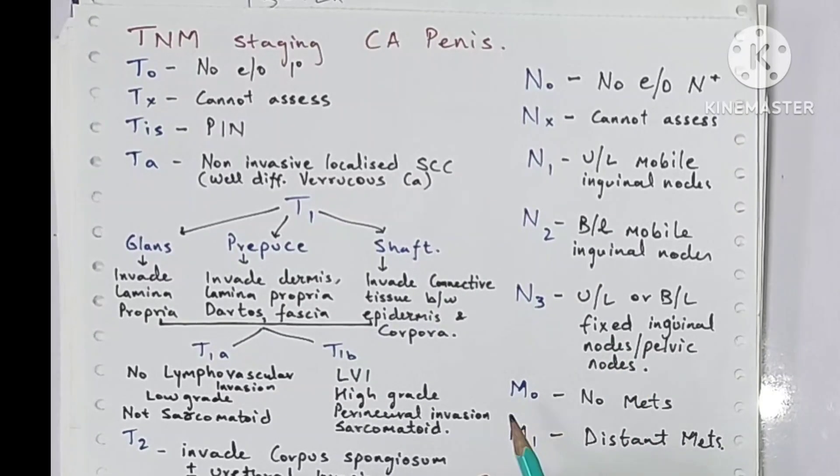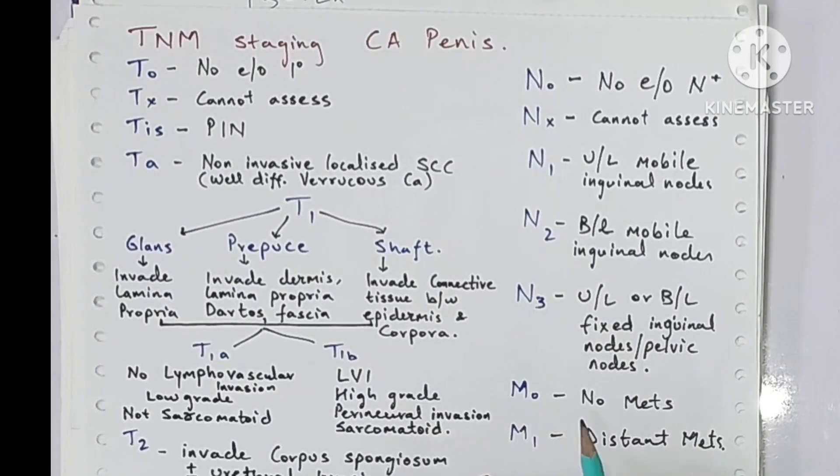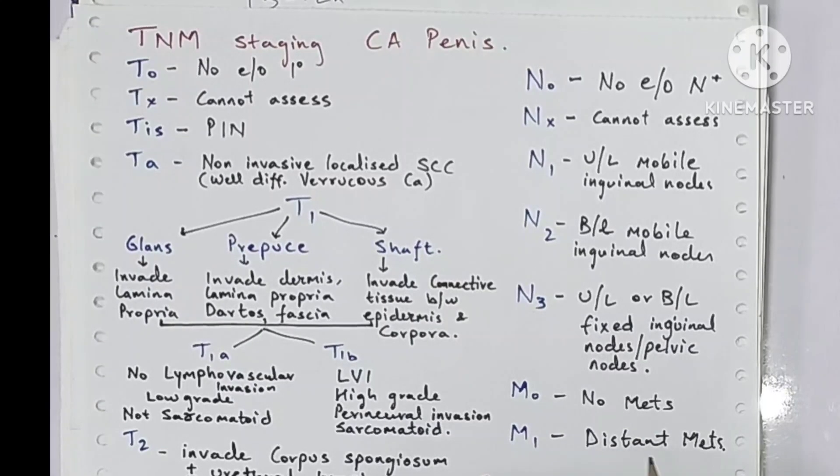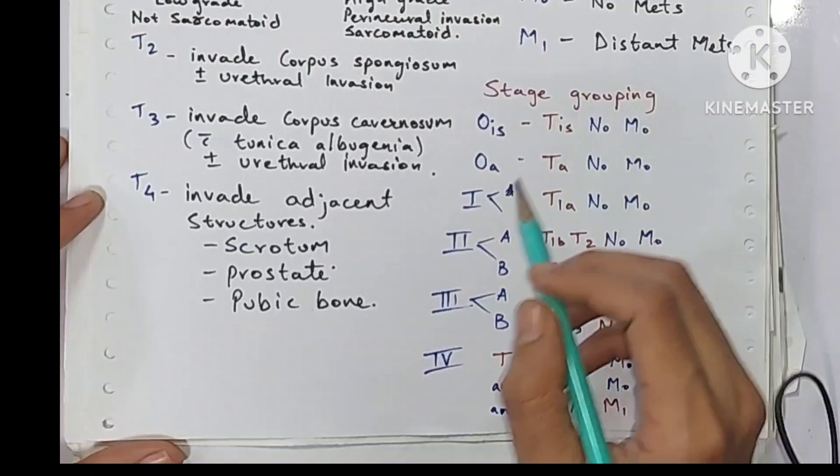For metastasis: M0 when there is no metastasis, and M1 when there is distant metastasis.